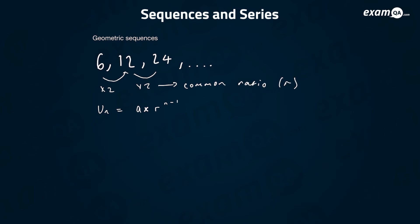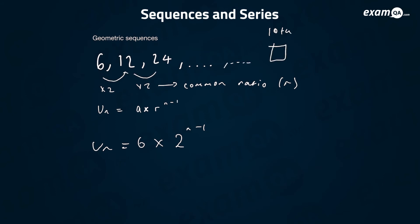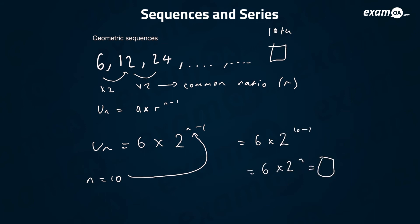You multiply by a common number, and we call that number the common ratio, or just the ratio — we call it r. And a is again the first number. So the nth term for a geometric sequence would be: a times r to the power of n minus 1. For this sequence the first number is 6 and the ratio was 2, so the nth term is 6 times 2 to the power of n minus 1. If I wanted the 10th term, I plug in n equals 10: 6 times 2 to the power of 9, then use your calculator.